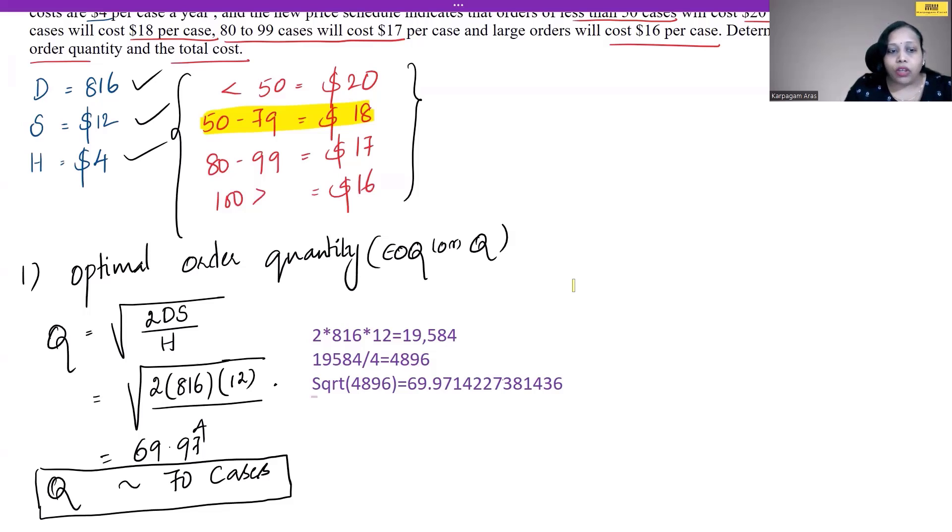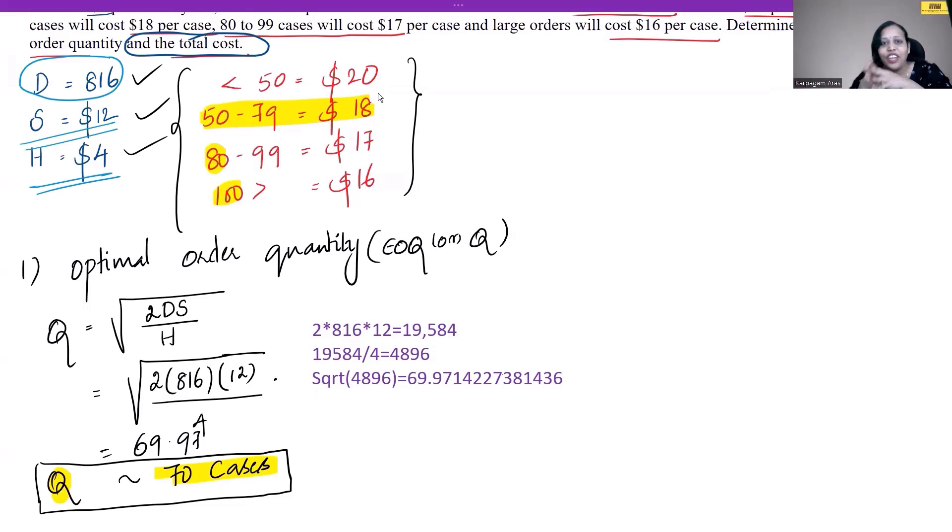Since we have our economic order quantity at 70 cases, at the next level I'm going to check it at 80, because 80 to 99 at this point will be the same. Then we'll check it at the next level of 100. Between 80 to 99 will be more or less the same, so we can check it at 100.